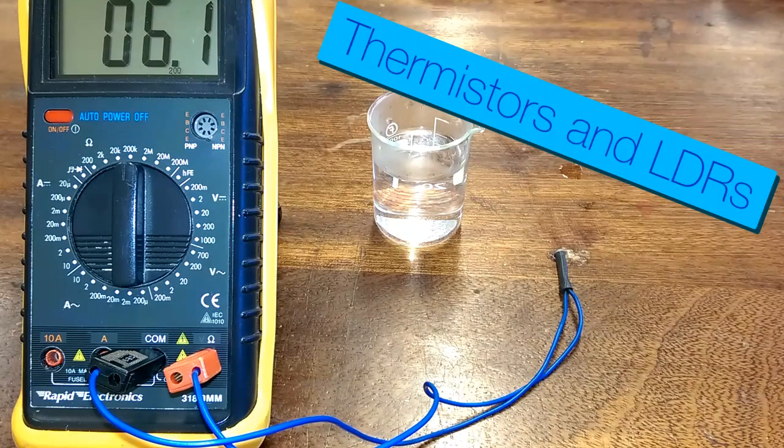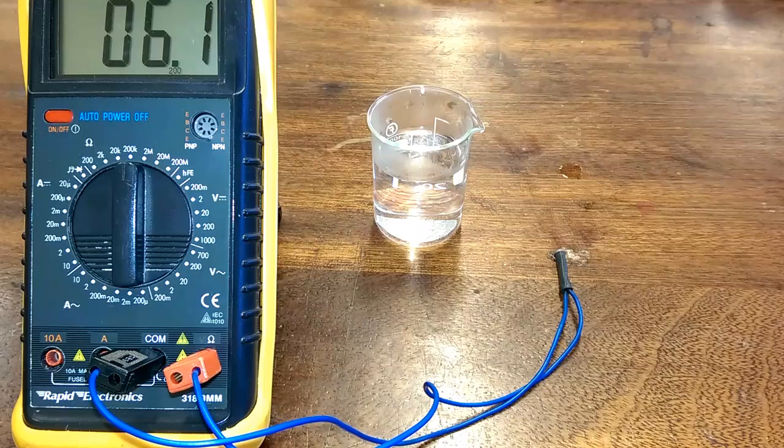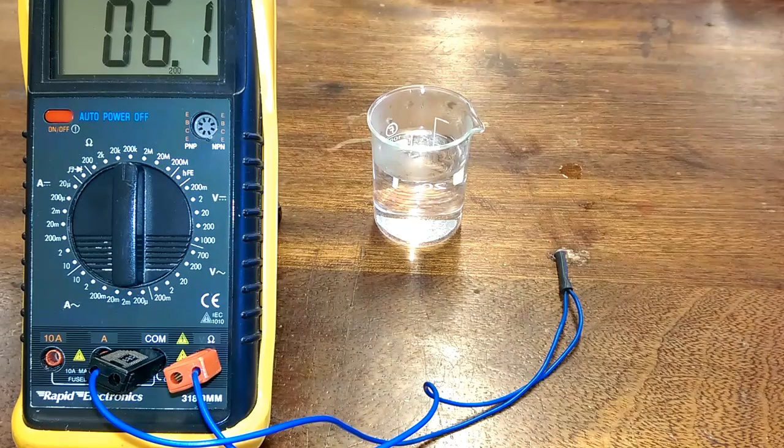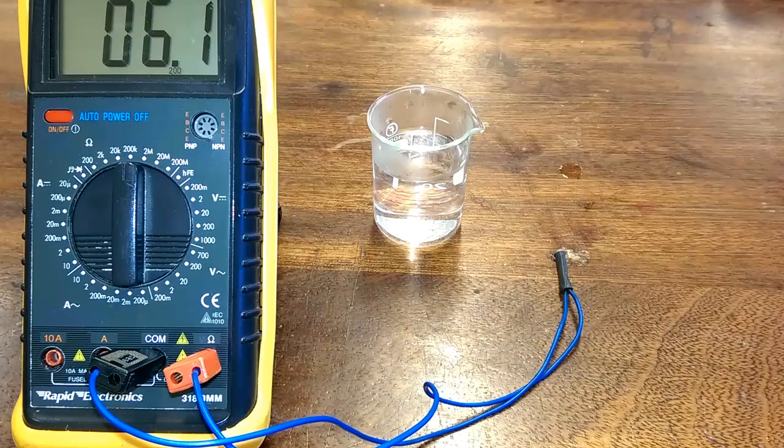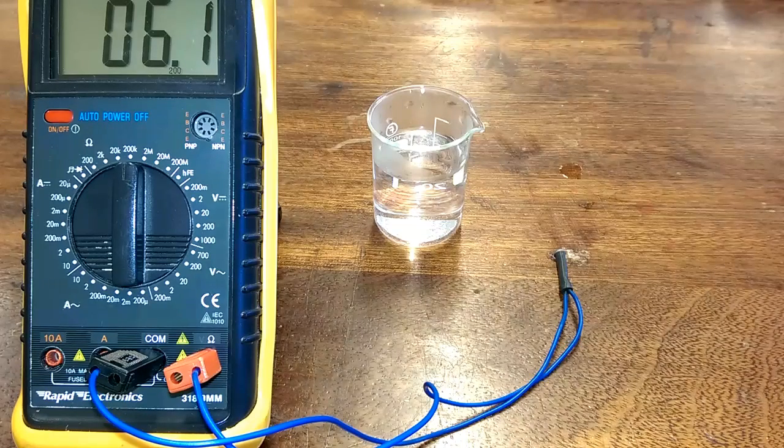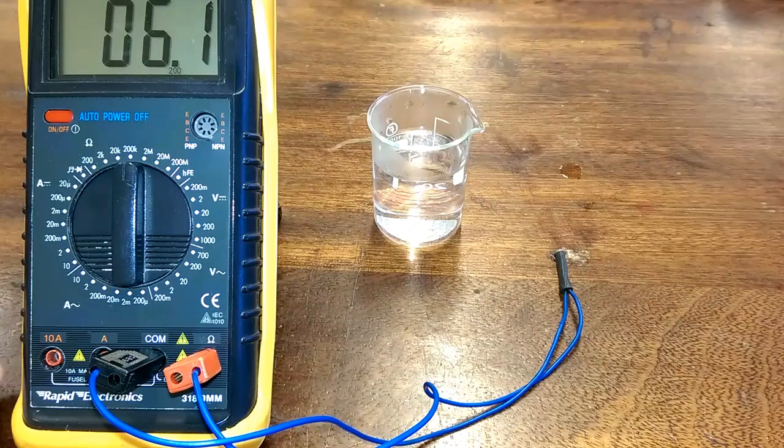Good morning. In this video I'm going to show you how a thermistor and a light dependent resistor work. They're two simple little components that we need to know about for our GCSE exams, and there are two key facts that you need to know about them.